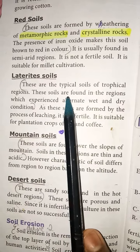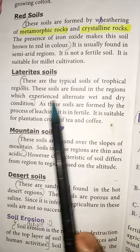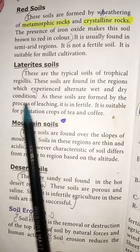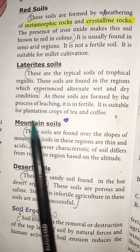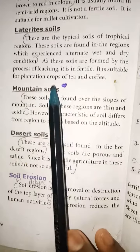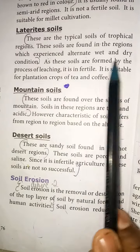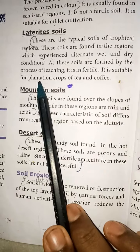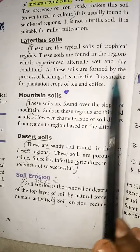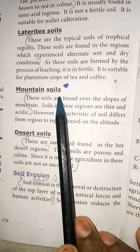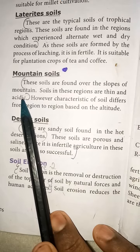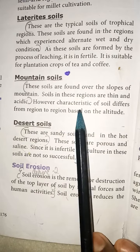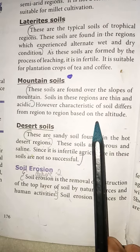Laterite soil: these are typical soils of tropical regions, found in areas which experience alternate wet and dry conditions. Laterite soil is formed by the process of leaching, and it is a fertile soil suitable for plantation crops of tea and coffee. Mountain soils are found over the slopes of mountains. Soils in these regions are thin and acidic, and characteristics differ from region to region based on altitude.